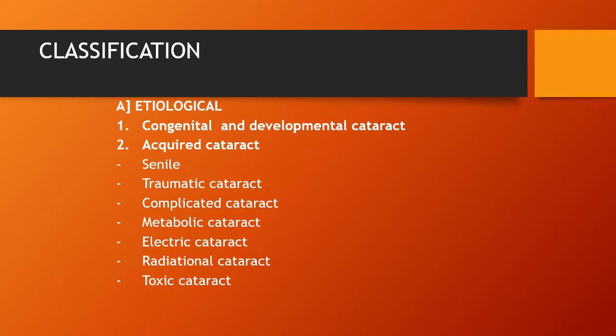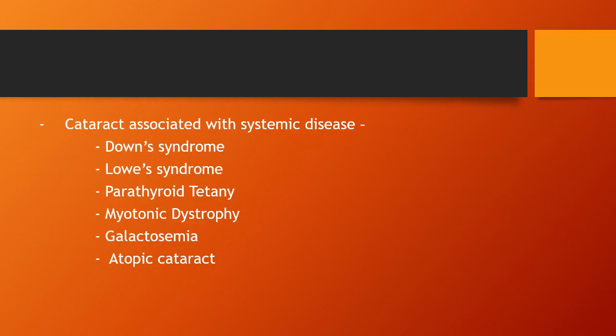Etiological classification consists of congenital and developmental cataract, and acquired cataract. Acquired cataract includes senile immature cataract, traumatic cataract, complicated cataract, metabolic cataract, electric cataract, radiation cataract, and toxic cataract. Cataract is also associated with systemic diseases like Down syndrome, Lowe syndrome, hypoparathyroidism, myotonic dystrophy, galactosemia, and atopic cataract.